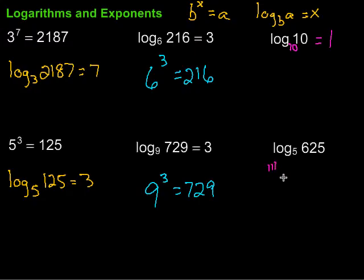So 5 times 5 is 25. Times another 5 is 125. Times another 5 is 625. So this would be equal to 4. Because 5 to the fourth power gives me 625.